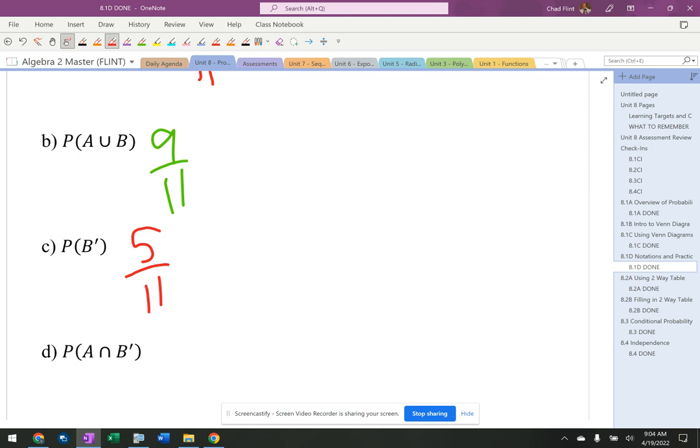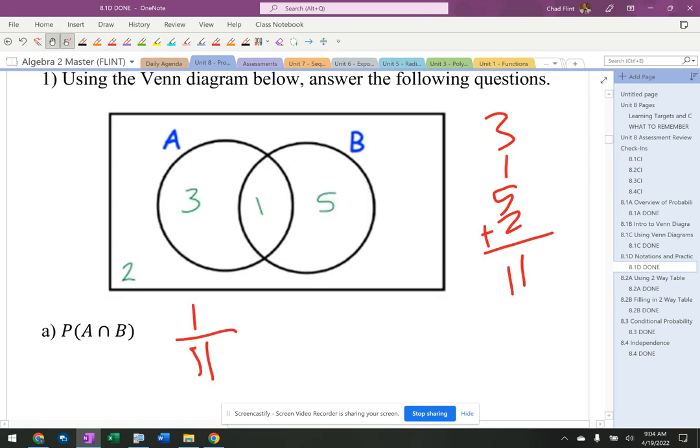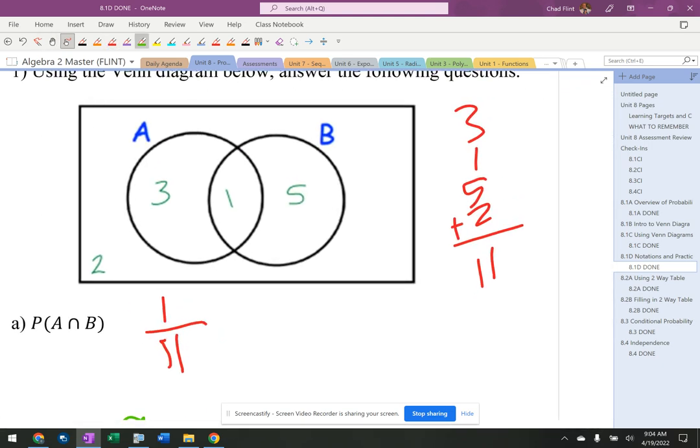A and not B. Now this I got to really think about. First of all, where is not B? Not B is here and not B is here. It needs to be A and it also needs to be not B. That's this right in here, A and not B, because this stuff out here is not B but it's also not A.